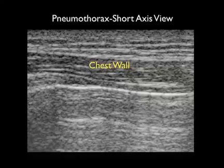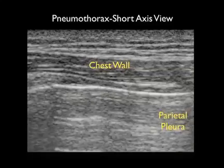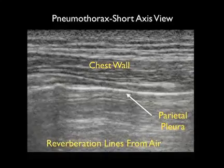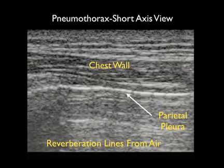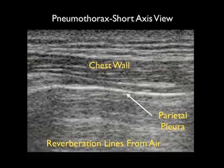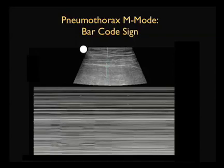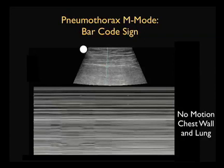Now let's inspect a pneumothorax from the short axis view. We see the chest wall anteriorly, the parietal pleura shown as a single non-mobile white line in the middle of the image. Note the failure of movement back and forth, the lack of vertical comet tails, and what we see here is repeating horizontal air lines from the pneumothorax. To document the absence of lung sliding and the presence of the pneumothorax, we'll again turn to M-mode. If we put the M-mode cursor down on the pleura, what we'll see is a set of linear repeating lines. This documents no motion of both the chest wall and of the lung, making up a finding known as the barcode sign.